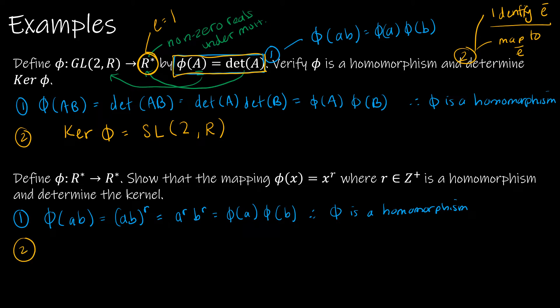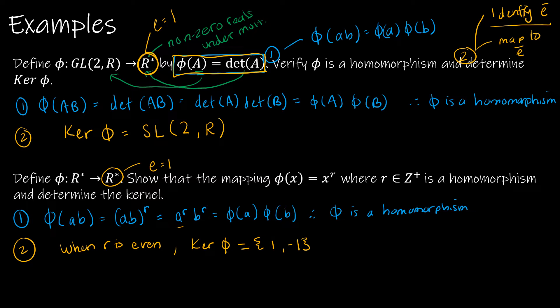Now let's look at the kernel. In R*, the identity is 1. So what maps to 1 under x^r? When r is even, the kernel of phi is {1, -1}, because both 1² and (-1)² equal 1. But when r is odd, the only thing that maps to 1 is 1 itself, so the kernel is {1}.